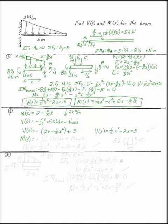M(X) is the positive integral from zero to X of V(X) dx plus M at the wall. Integrating V gives one-fifteenth X cubed minus X squared plus five X. For the boundary condition: as X goes to zero, I have eight and a third acting one way and my internal moment counterclockwise, so eight and a third has to be negative, giving minus eight and a third. This matches what we had before, which is very encouraging.